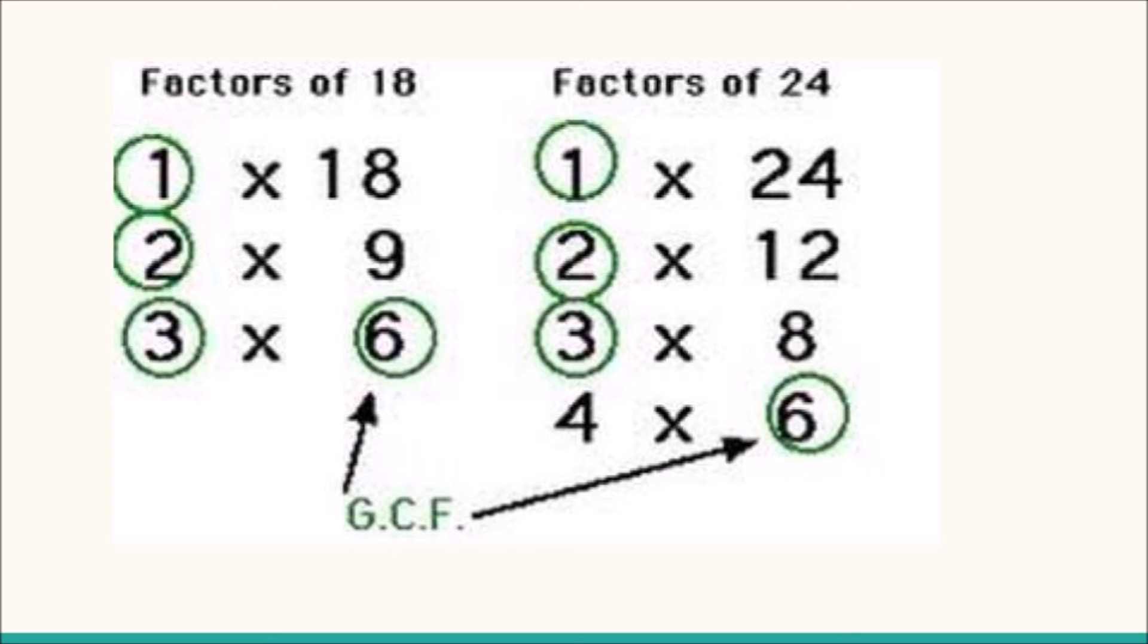The common factors are rounded here. They are 1, 2, 3, and 6, out of which the greatest is 6. So the GCF of 18 and 24 is 6.